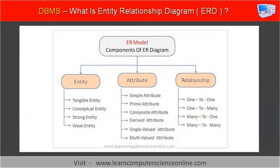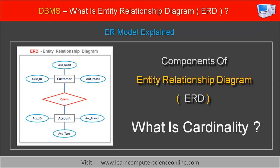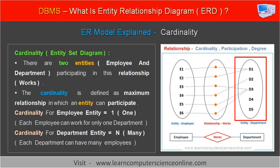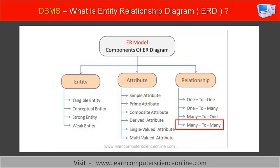Let us now discuss the fourth and final component of the ER diagram — the concept of cardinality, cardinality ratio, and the mapping of cardinalities. The cardinality ratio describes the binary relationship set, expressing the maximum number of instances of one entity set that can be associated with the maximum number of instances of another entity set in a given relationship. Different types of cardinality ratios include: one-to-one relationship, one-to-many relationship, many-to-one relationship, and many-to-many relationship.